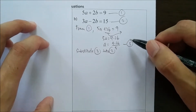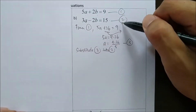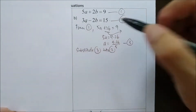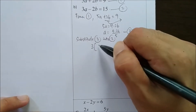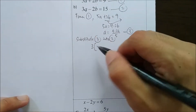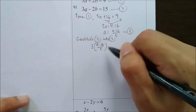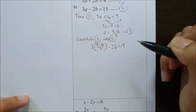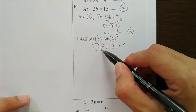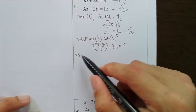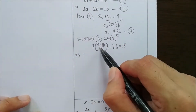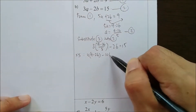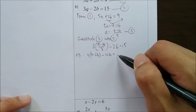Now we substitute equation 3 into equation 2. Meaning the A in equation 2 is replaced with 9 minus 2b over 5 — always use brackets. To get rid of the fraction with 5, we multiply the whole equation by 5. The 5s cancel, so we get 3 times (9 minus 2b), then 5 times negative 2 gives negative 10, and 5 times 15 gives 75.